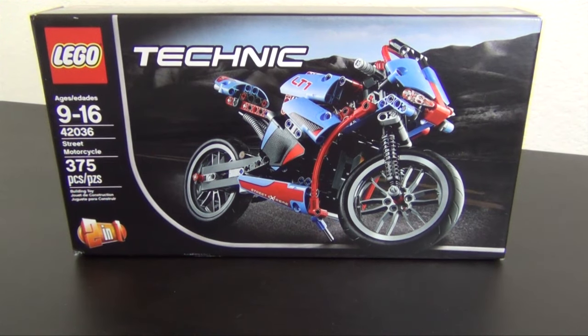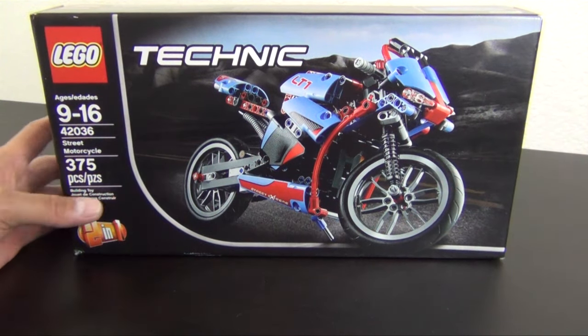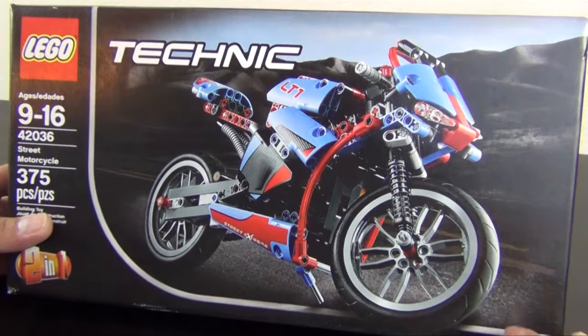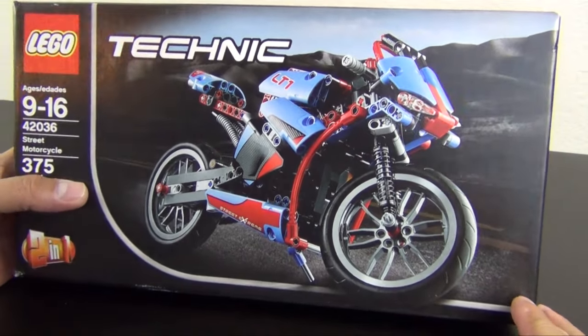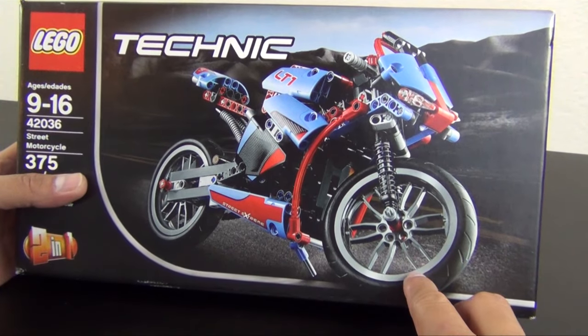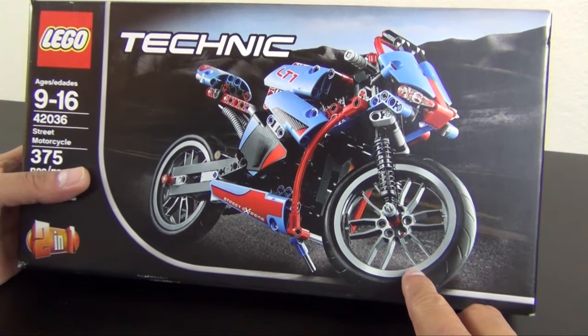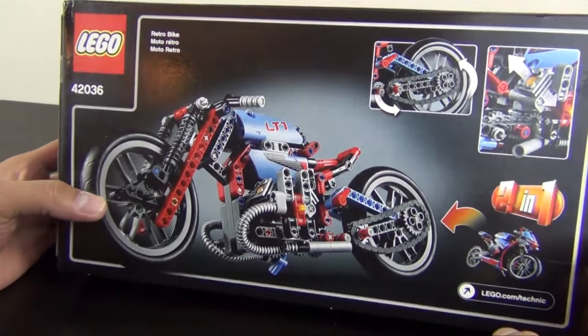Hey everyone, welcome back to the Hidden Brick where today we're going to build the LEGO Technic street motorcycle set number 42036, 375 pieces. Pretty cool little set. So the Technic has come out with a motorcycle every couple years. They did a street motorcycle about five or six years ago, so this is a different rendition of it.